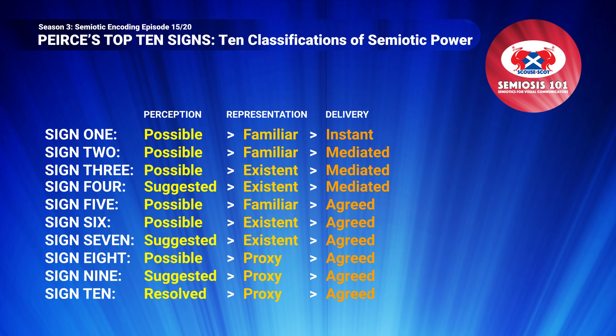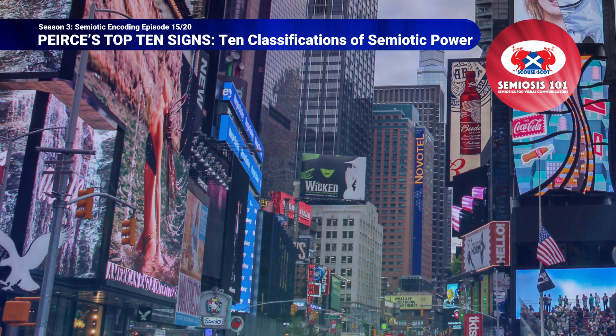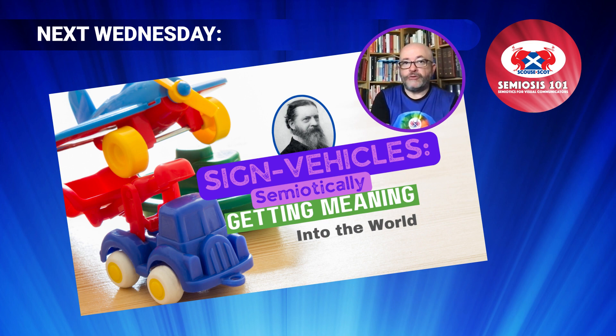It is up to the individual creative if they wish to become more successful at visual communicating. If so, the so what question is actually redundant. If not, then fine — but you will miss out on a strategy to get beyond the barrier of visual noise. See you all again next week for more Semiosis 101 to help illustrators and designers to enhance your visual communication skills.